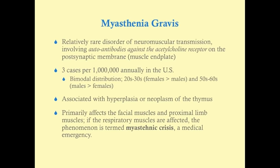There is a second peak in the 40s through 60s, particularly around the 50s and 60s, where males predominate. There is also an association between myasthenia gravis and thymus abnormalities — either hyperplasia or neoplasm — so any diagnosis of MG requires workup for thymoma or thymic hyperplasia, primarily with chest X-ray imaging.